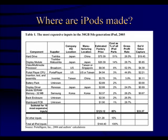Here's another example of how multinationals operate across national boundaries. This shows where iPods are made — where the various components are made. The components are primarily assembled in China, but the components come from Japan, the United States, Taiwan, Singapore, and Korea.